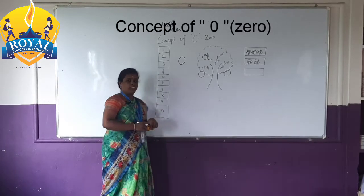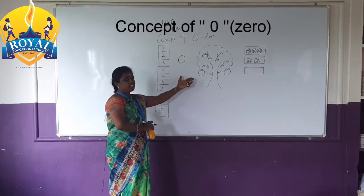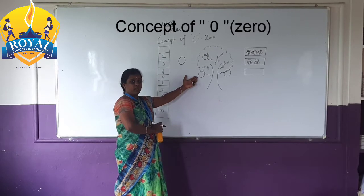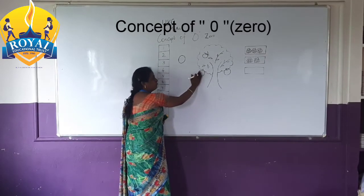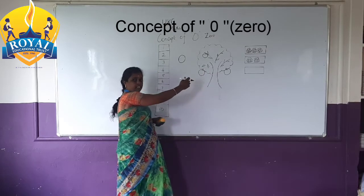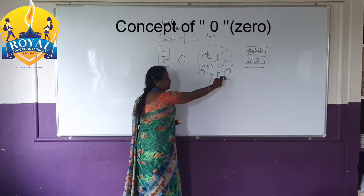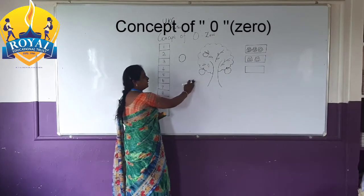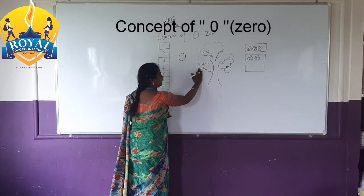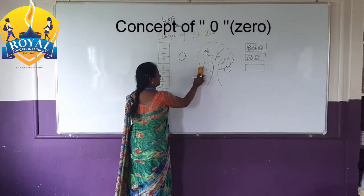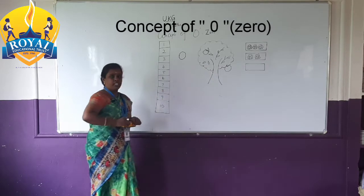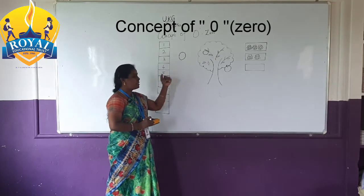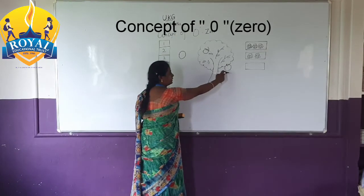Let's see the tree. How many apples here? 1, 2, 3 apples. 3 apples here. I pick 1 apple. How many apples do we see now? 1, 2.